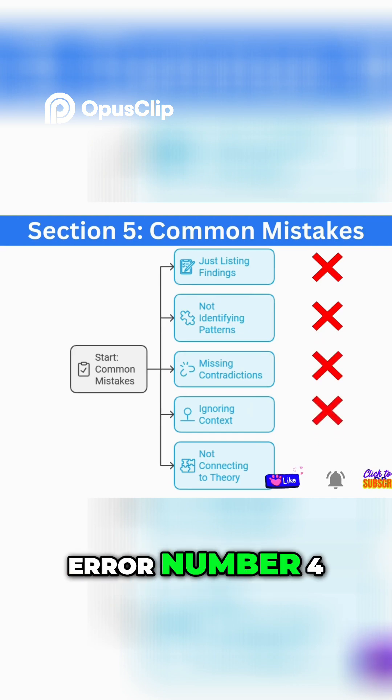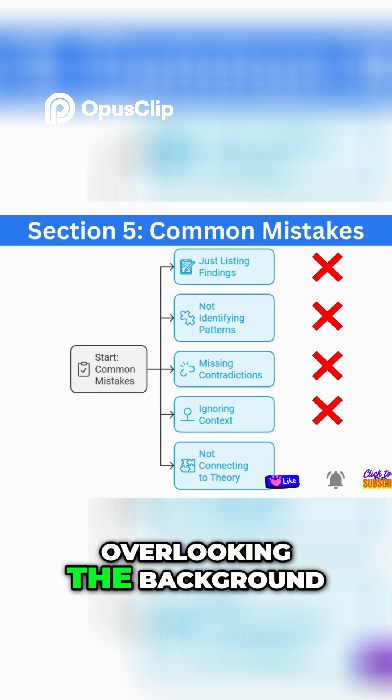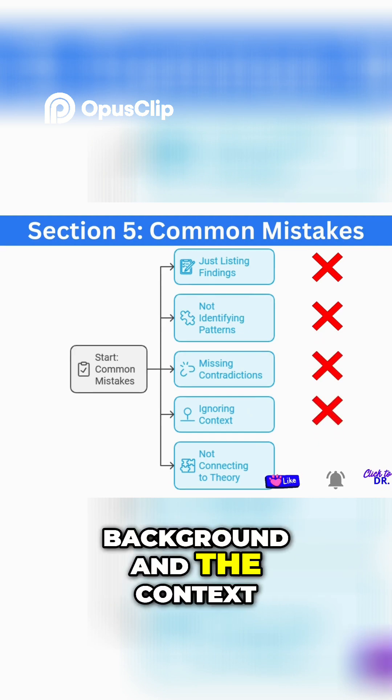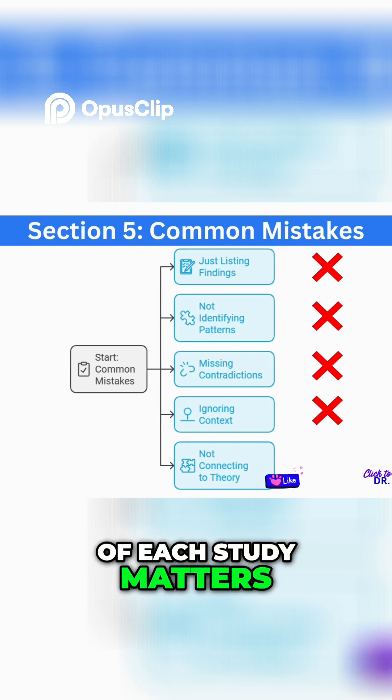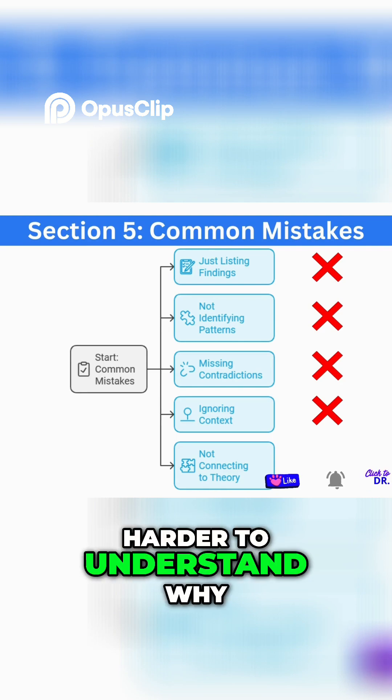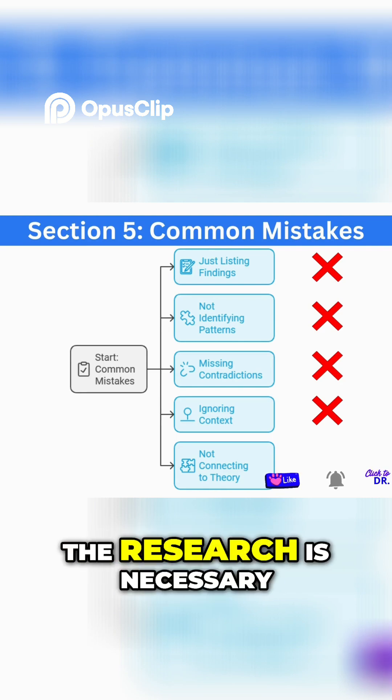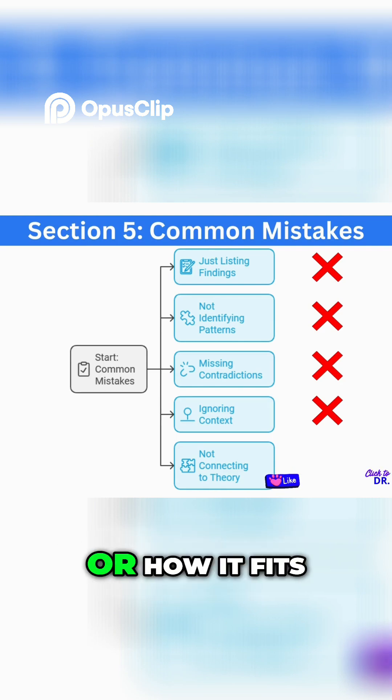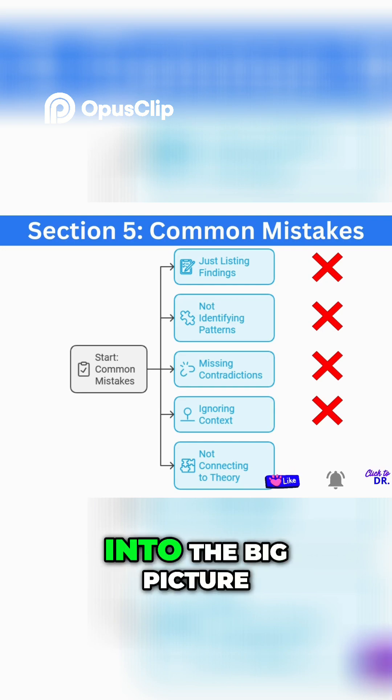Error number four: overlooking the background. The background and context of each study matters a lot. Ignoring it can make it harder to understand why the research is necessary or how it fits into the big picture.